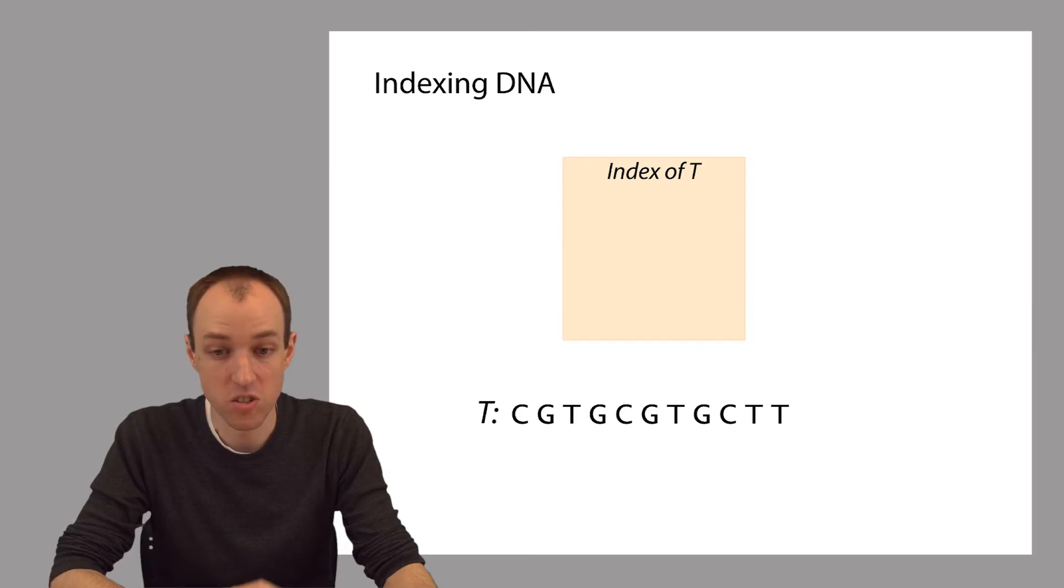In this example, we'll take each substring of length 5 and insert it into our index. Let's take the first substring of length 5 and insert it. As in the index of a book, we're going to associate with our substring that we extracted the offset where it occurs in the text. So for this very first substring of length 5, we associate the offset 0. Let's do the second substring of length 5, and now the third.